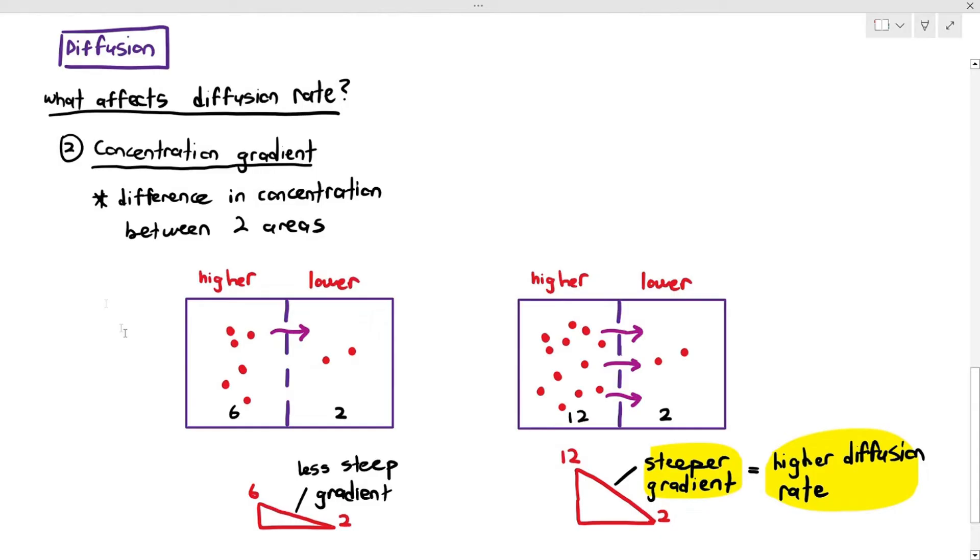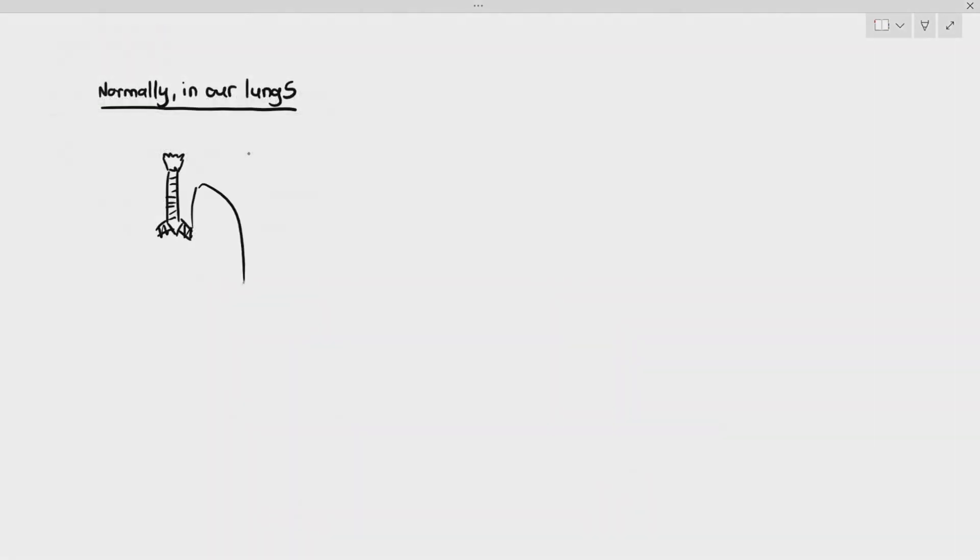So, how can we apply concentration gradient to daily lives? I'll give you one example. I don't need you to memorize this yet, but this is more relevant in chapter 9. You see, what actually happens is, in our lungs, there is a particular tissue known as the alveoli.